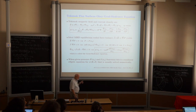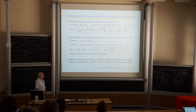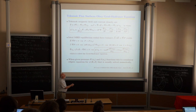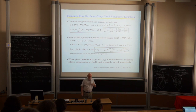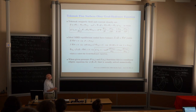The Grad-Shafranov equation is an elliptic second-order differential equation, but it's nonlinear because we have to specify a pressure function — high in the center, low outside — and I, a current function. It's usually solved numerically. For experimental data analysis, you need to map real spatial positions (major radius R, vertical distance Z) to flux surfaces, requiring an iterative solution process.